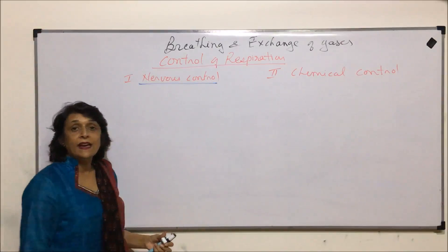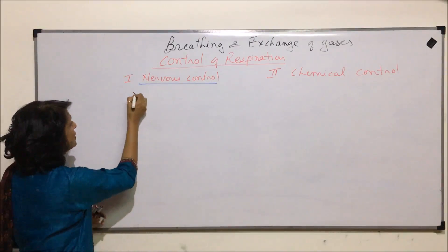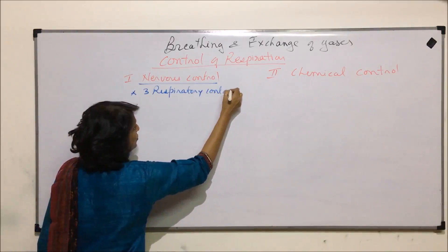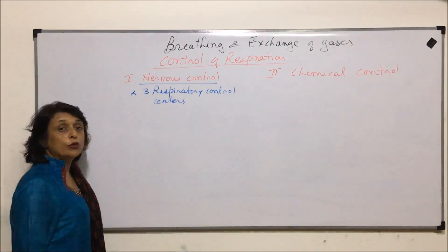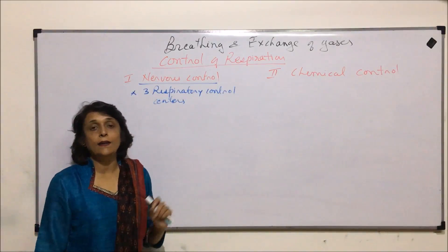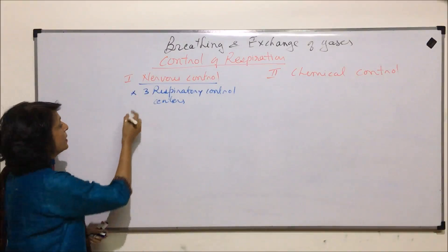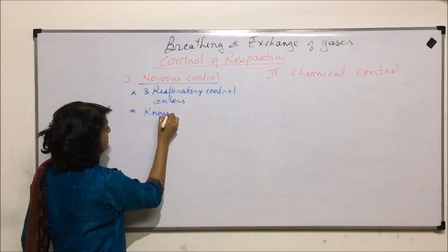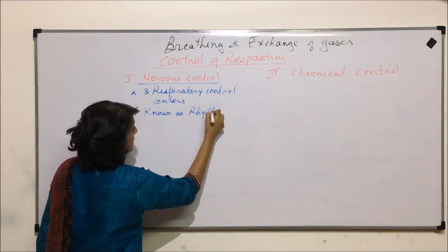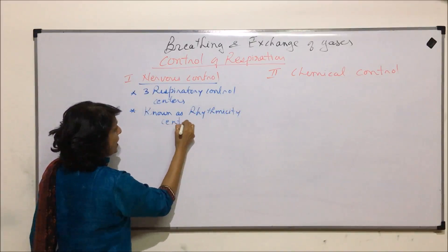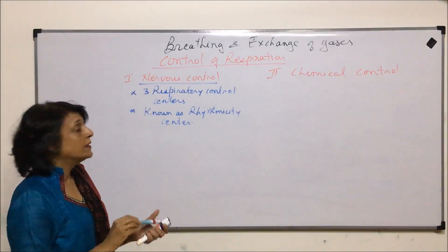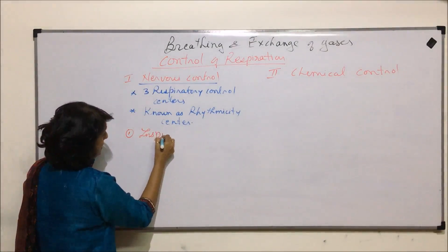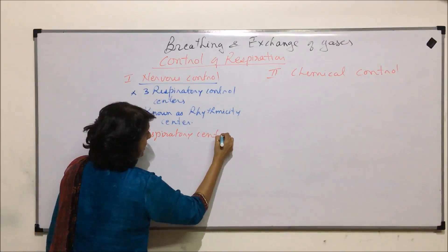In nervous control, there are three respiratory control centers. Out of these, two are on the medulla and one is on the pons. These respiratory control centers together are known as rhythmicity centers. The first one is called the inspiratory center.